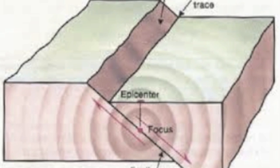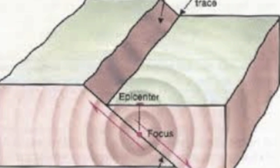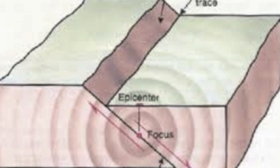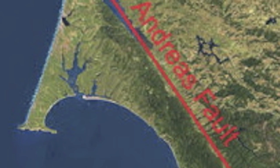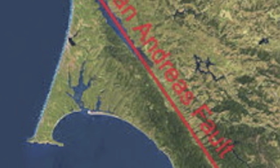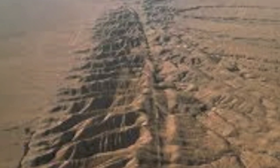A fault is a region on Earth's surface that is split into two pieces. Most faults are small, but some can be miles long. The San Andreas Fault was first identified in Northern California by a Berkeley professor by the name of Andrew Lawson in 1895. The fault is named after a small lake which lies in a valley south of San Francisco, called Laguna de San Andreas.